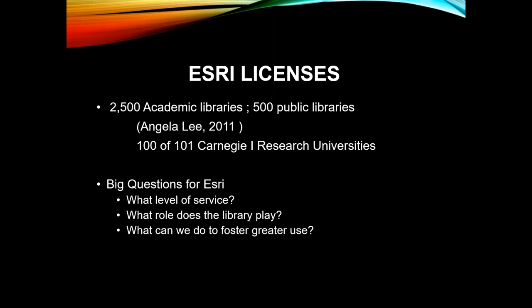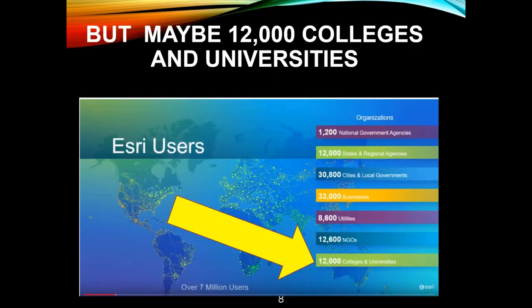Let's talk about Esri for a moment. There are only 2,500 academic libraries with site licenses. I did an analysis: 100 of the 101 Carnegie One research universities have Esri site licenses. So from Esri's viewpoint, what level of service is being provided at the libraries? And more importantly, what can we do to foster additional utilization? This little arrow points down to the fact that there may be 12,000 colleges and universities that are potential Esri users.